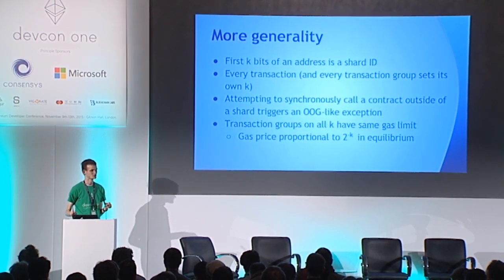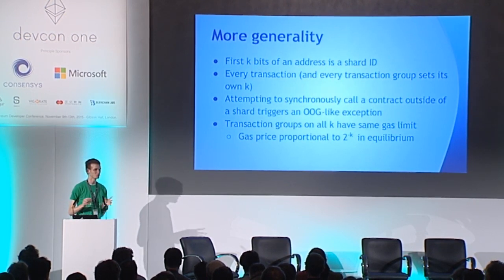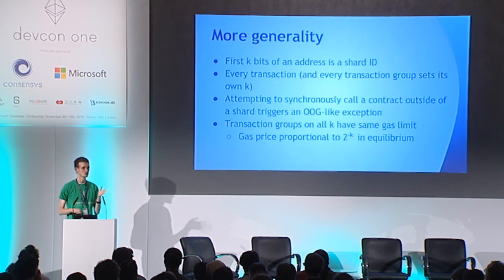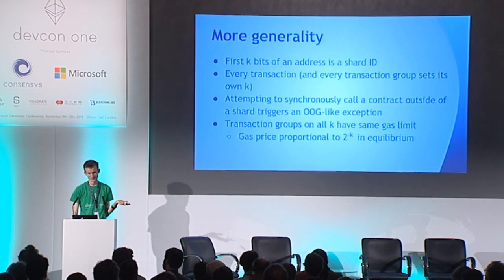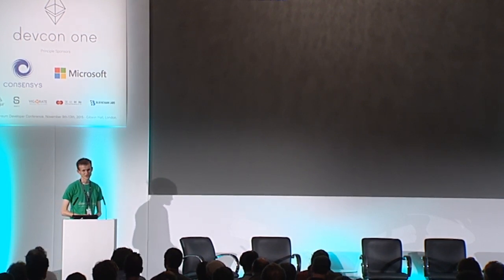In equilibrium, the lower your k is, the more expensive it's going to be. That's a way of creating balance and letting people choose along the curve between synchrony and cost. Welcome to asynchronous Ethereum 2.0 contracts programming.